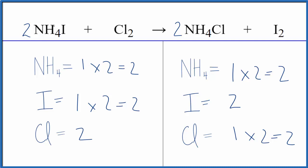So it's helpful when you have a polyatomic ion like the ammonium ion on both sides. Just count it as one thing. Makes it a lot easier.